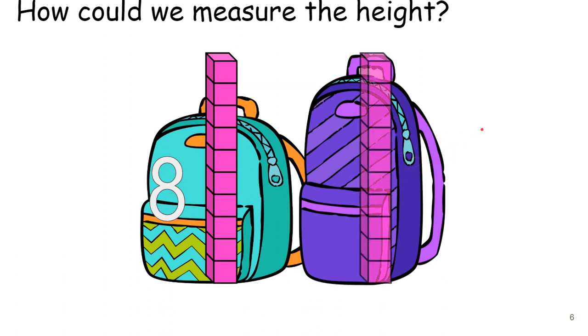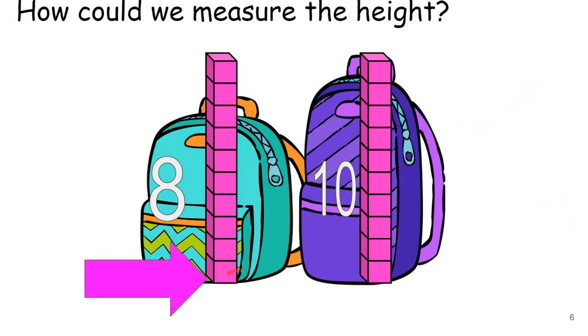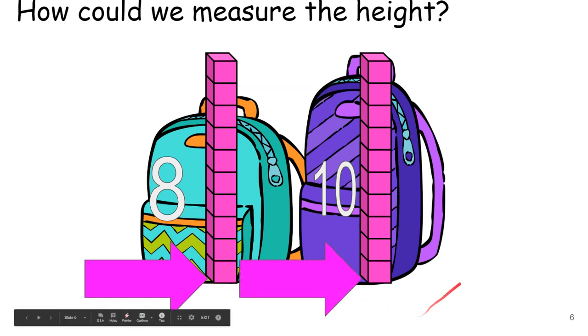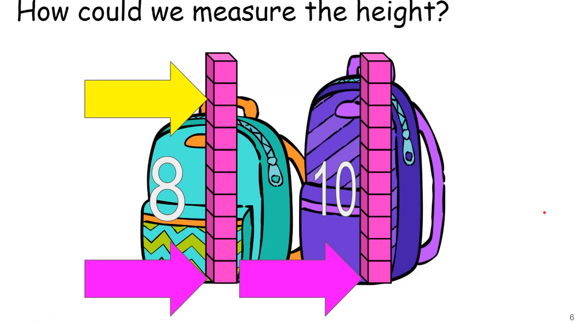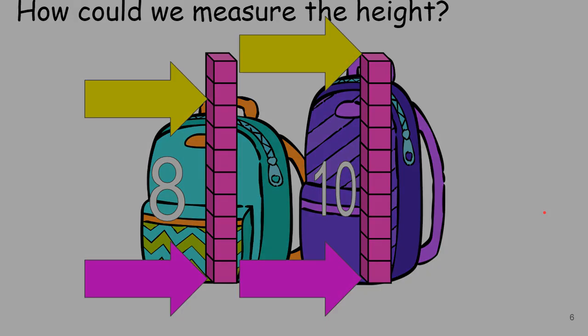Alright, let's check this one. One, two, three, four, five, six, seven, eight, nine, ten. So the purple backpack is ten cubes tall. And the teal backpack is eight cubes tall. And notice we started from the bottom on both of them. And then we measured to the top on both of them.